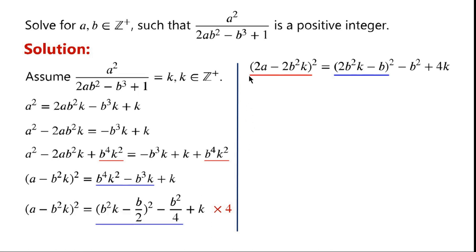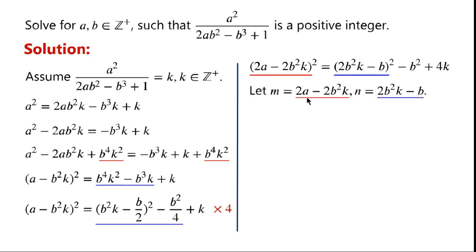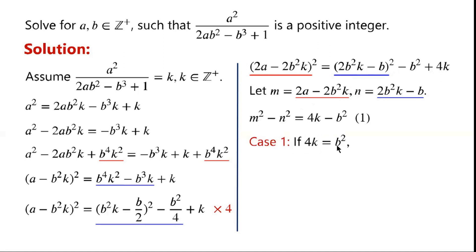The right-hand side of the equation can be written as (2b squared k minus b) squared minus b squared plus 4k. Now we let m equal to 2a minus 2b squared k and n equal to 2b squared k minus b. We can write this equation as m squared equals n squared minus b squared plus 4k. In Case 1, if 4k equals b squared,